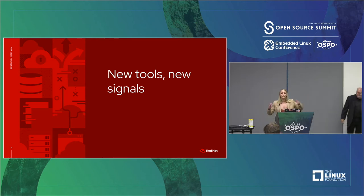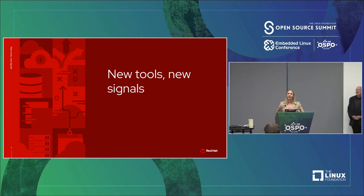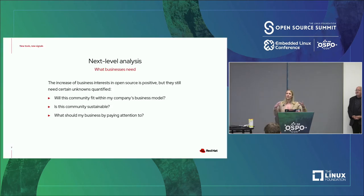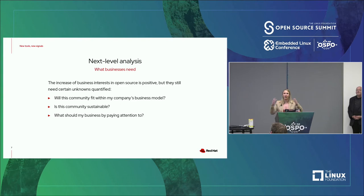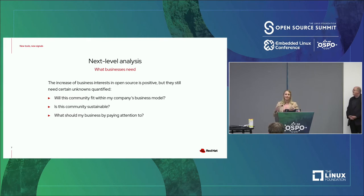The tools are one thing, but not everyone needs to use Cauldron or Augur. What matters is what you're doing with the data and how you're using it to inform decisions. We can look at this from a business lens — seeing what businesses actually need. There are many people who are very new to the open source space, and when you have all of these different communities and all this different information, how do you hone in to learn more about the communities you're trying to get involved in?